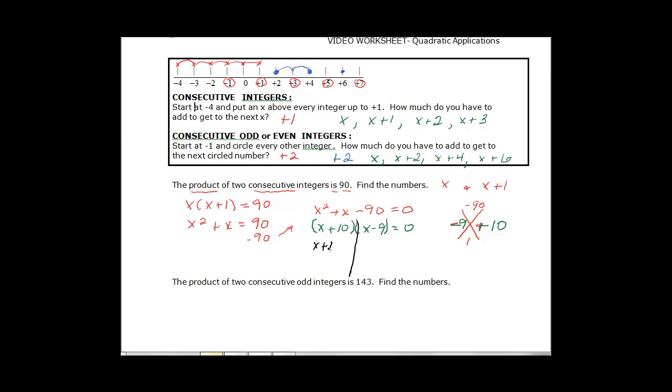Now we're ready to see what the possible integers are. So if x plus 10 is equal to 0, when we subtract 10 from both sides it's going to be negative 10, and if we come over here and say x minus 9 is equal to 0 and we add 9 to both sides, x is going to be equal to 9 and now you can see that we have some options here.